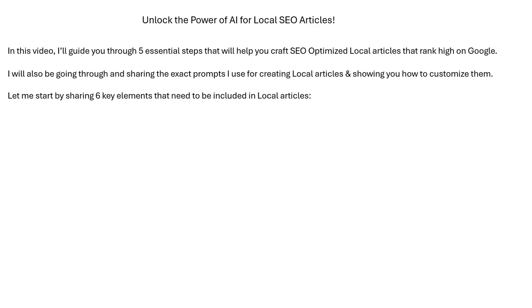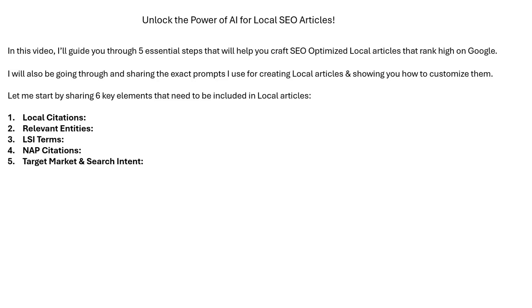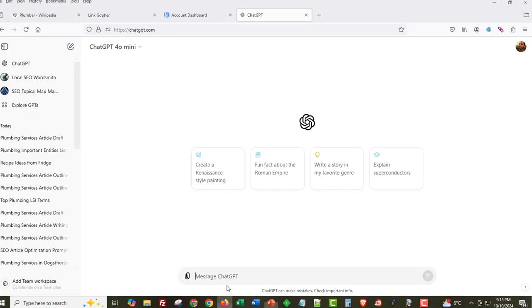I'll also be sharing the exact prompts that I use myself for creating local articles and showing you how you can customize them for your own needs. Let me start by sharing six key elements that need to be included in local articles: local citations, relevant entities, LSI terms, NAP citations, targeting the right search intent and target market, and customizing the article with your own business details.